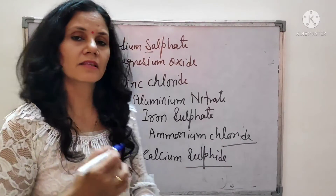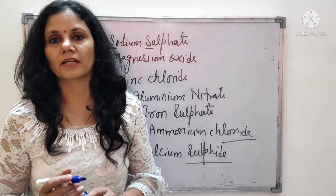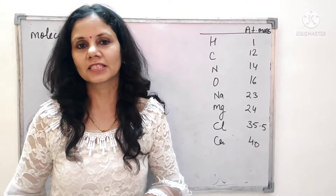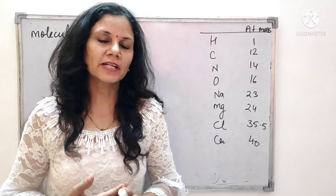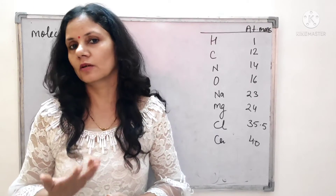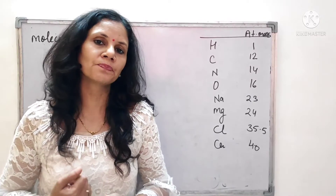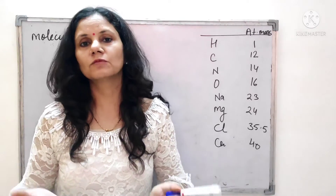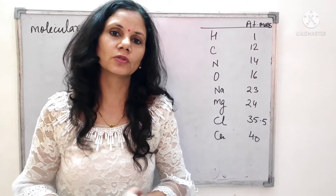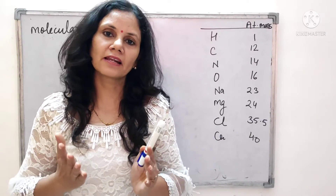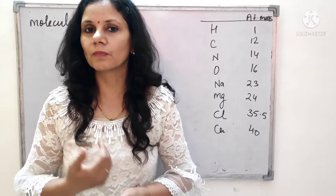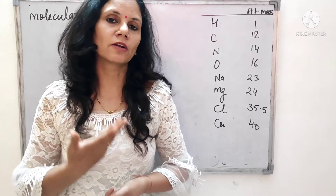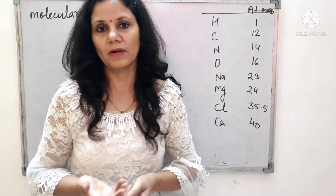So in this way you can write names as well as formulas. Now we have to discuss molecular mass. We discussed two types of molecules: molecules of elements, made of the same type of atoms, like O2, N2, H2 — we also discussed atomicity. Then there are molecules of compounds, made of different atoms, like H2O, CO2, NH3. To find molecular mass, you need to know the atomic masses, since molecules are made of atoms.